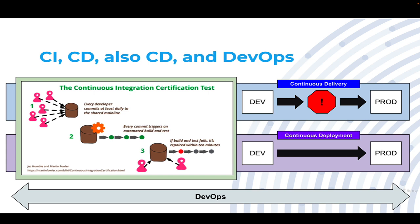Throughout all of this, you have DevOps. DevOps, simply put, is when a team owns their work into production, meaning a developer makes a code change, gets it into production, and is also responsible for maintaining it there. From an end-to-end perspective, developers own their work into production.